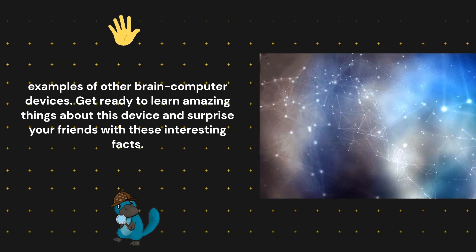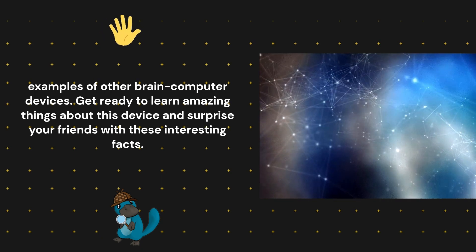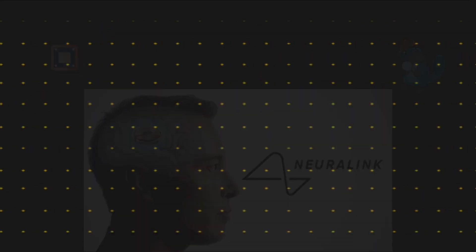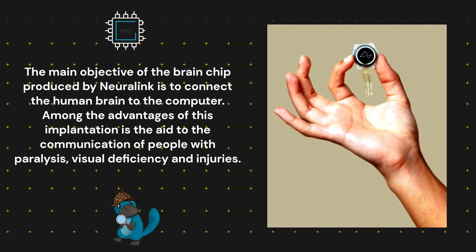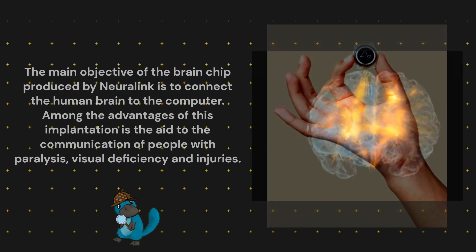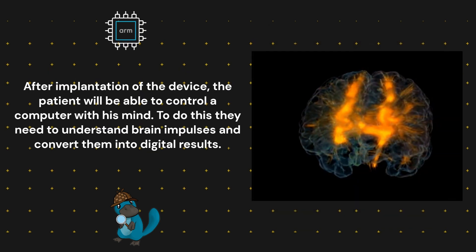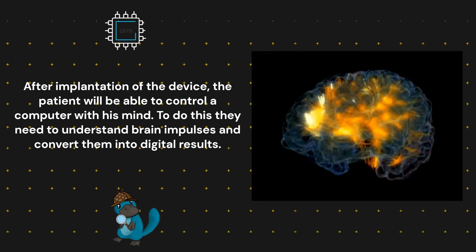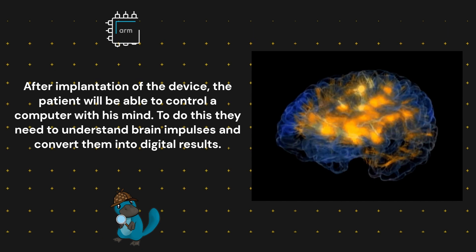Introduction to the Neuralink Project. The main objective of the brain chip produced by Neuralink is to connect the human brain to the computer. Among the advantages of this implantation is the aid to the communication of people with paralysis, visual deficiency, and injuries. After implantation of the device, the patient will be able to control a computer with his mind. To do this, they need to understand brain impulses and convert them into digital results.